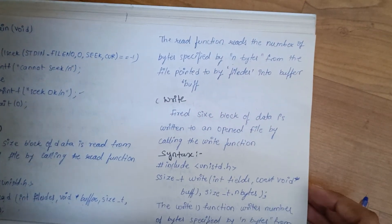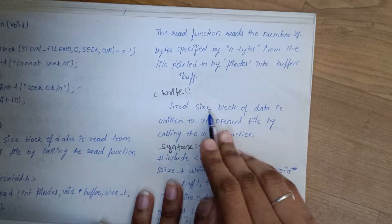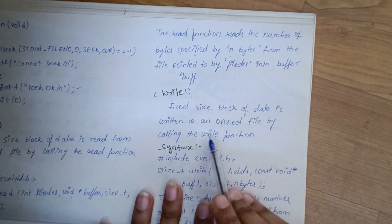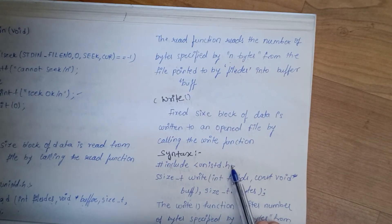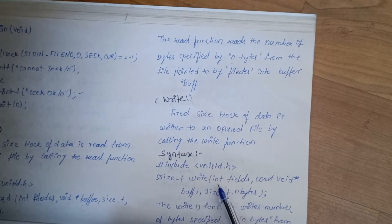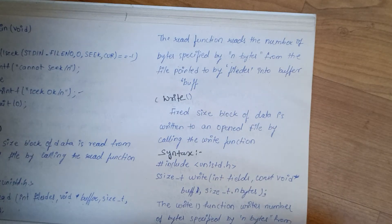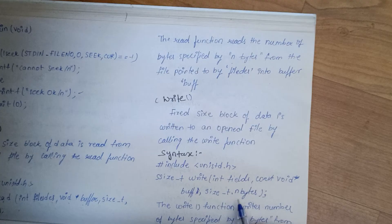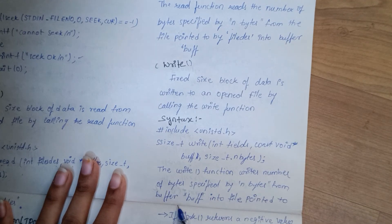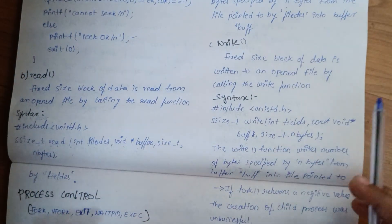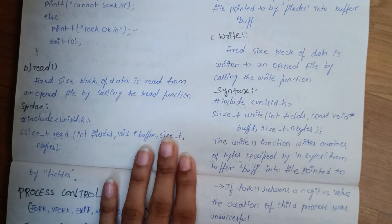The last function is write. A fixed-size block of data is written to an opened file by calling the write function. The syntax is the same header unistd.h. The signature is: ssize_t write(int fd, const void *buffer, size_t nbytes). The write function writes the number of bytes specified by nbytes from the buffer into the file pointed to by fd.